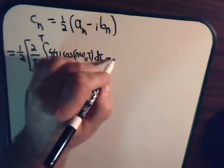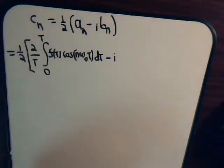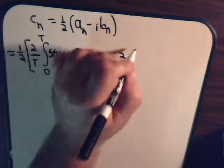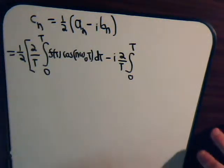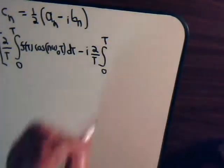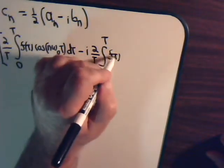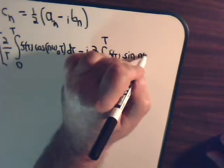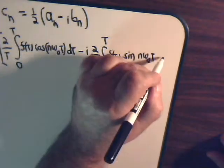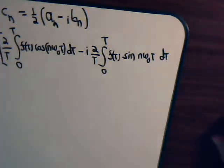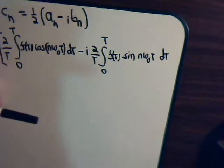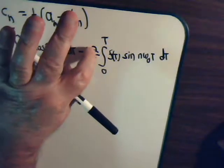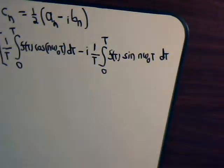Then we have minus i times b sub n, and b sub n is this integral, 2 divided by T, with the same limits, and then we have f of t times the sine of n omega t. And let's see, these 2's will cancel out, so this goes away, and we have this.